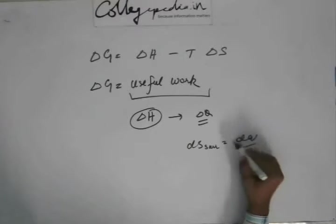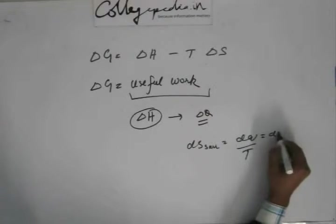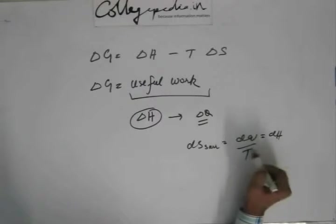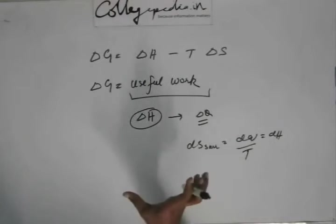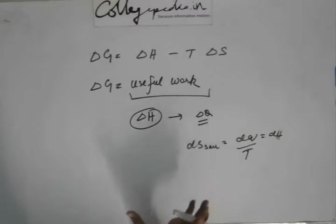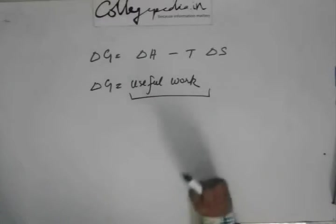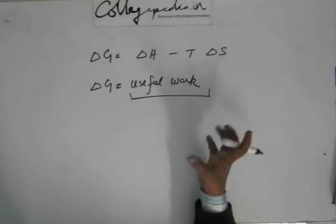And considering the pressure and volume to be the same, we got this dQ is equal to dH. So here dH actually is dQ. So delta H is delta Q, which the system has got from the surrounding. So delta H is the amount of heat that has been given into the system.